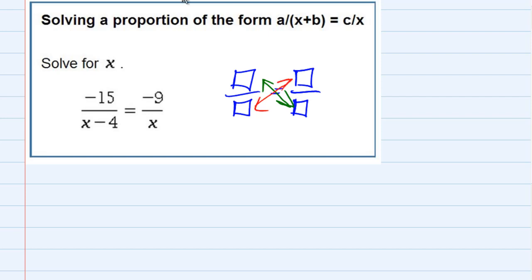So if I use that, multiplying this way, I've got—I'm sorry—negative 15 and an x, so negative 15 times x.